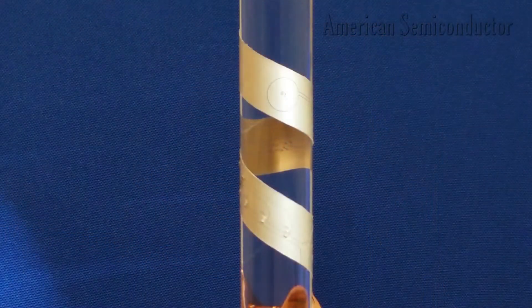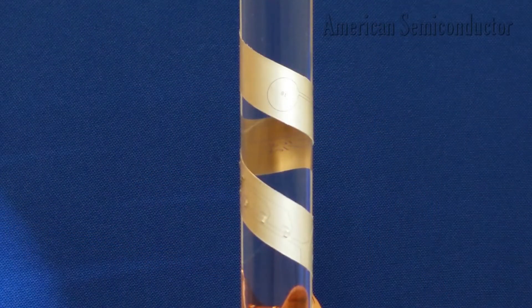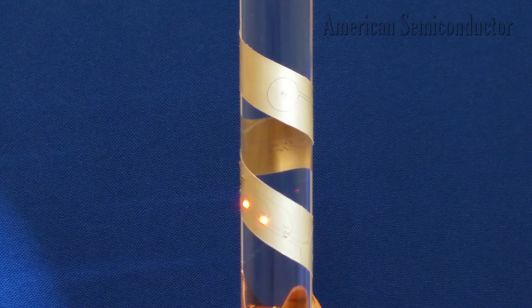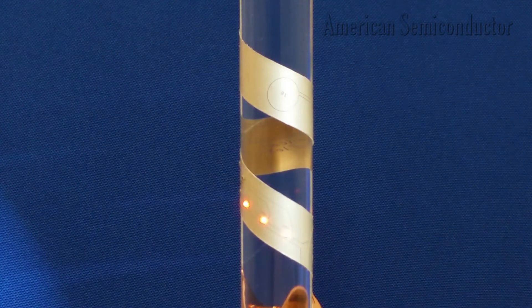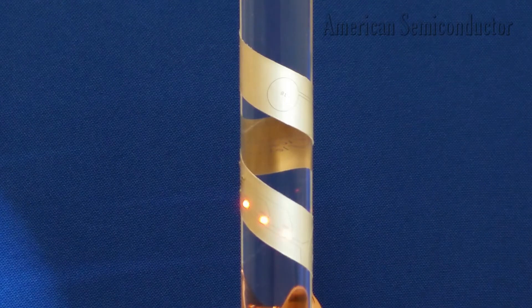When we apply power, the Flex SoC begins to execute the program code stored on its 256 kilobits of flash memory, causing the LEDs to blink in sequence from left to right.